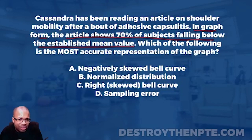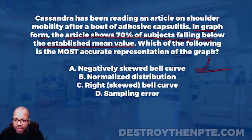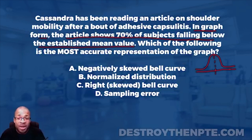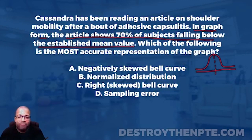I'll go ahead and draw that out — for those of you on the podcast who need a drawing, check me out on YouTube. So we have the key fact: in graph form, the article shows 70% of the subjects falling below the established mean. That means I'm not looking at a regular bell curve.